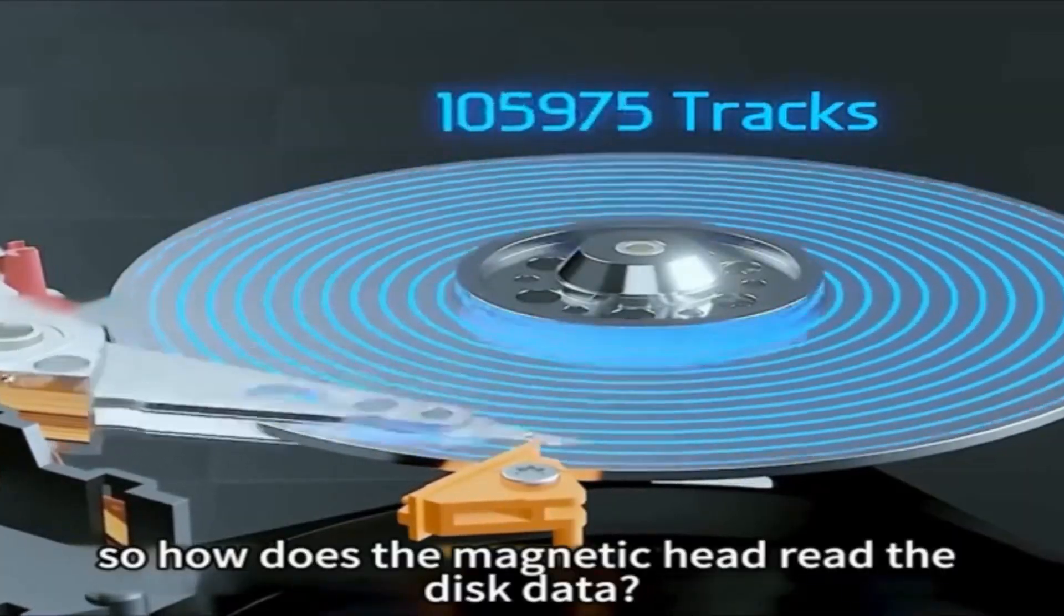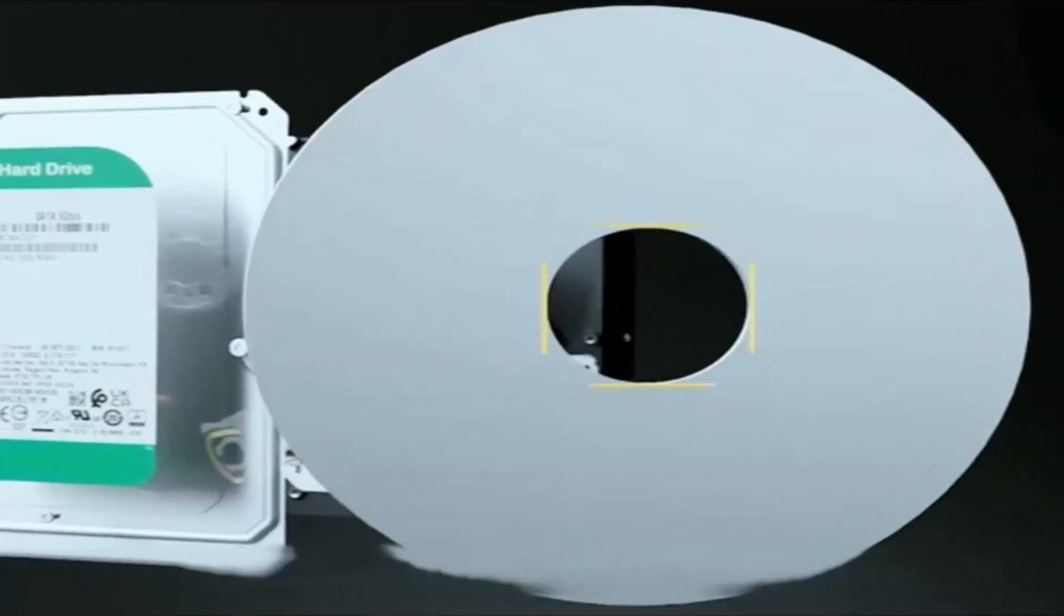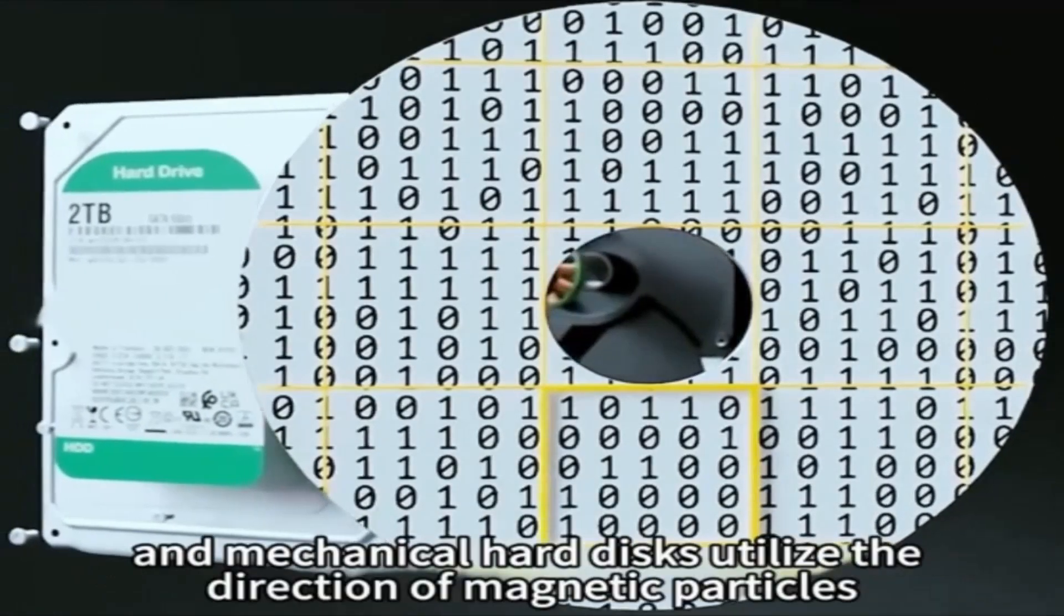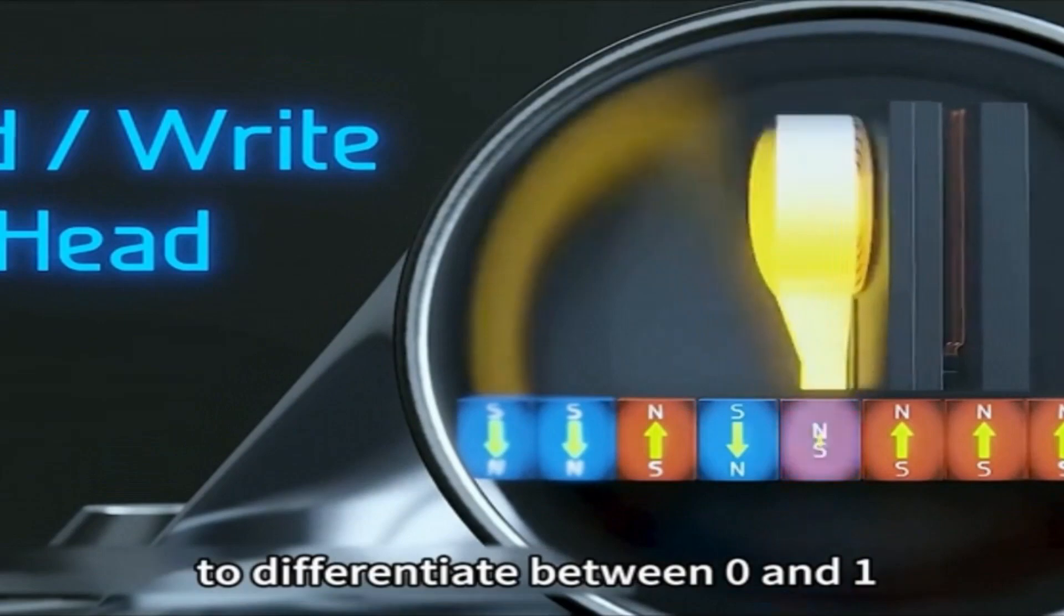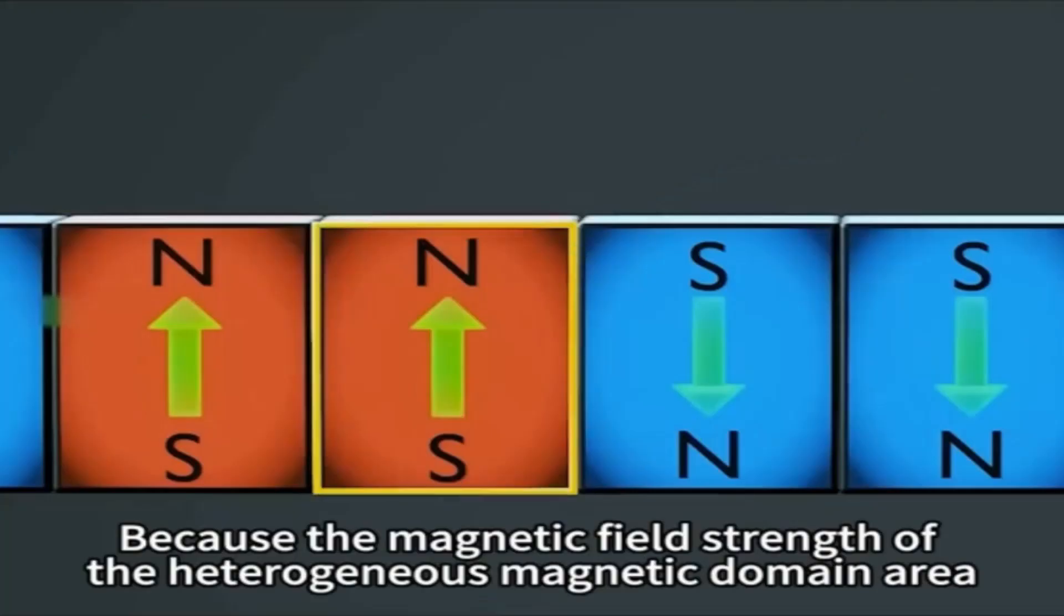So how does the magnetic head read the disk data? Actually, all our data is stored in the form of 0 and 1, and mechanical hard disks utilize the direction of magnetic particles to differentiate between 0 and 1.